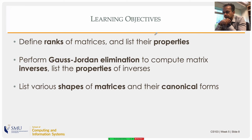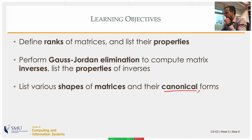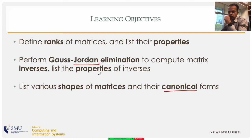A matrix is a rectangular array — it can be square, or a tall rectangle with more rows than columns, or a wide rectangle with more columns than rows. We'll look at what's called the canonical form. The canonical form is the output of a Gauss-Jordan elimination. Jordan also has a different canonical form that we'll define later in the course.